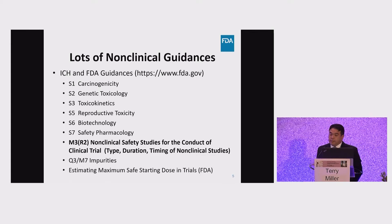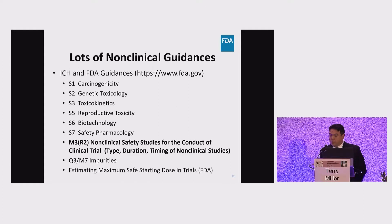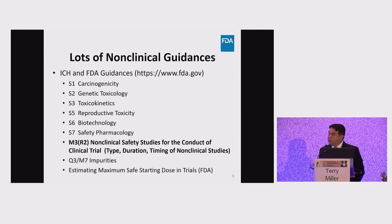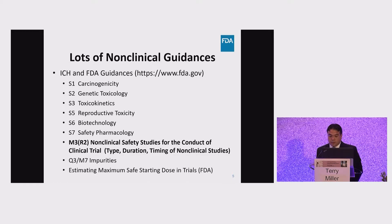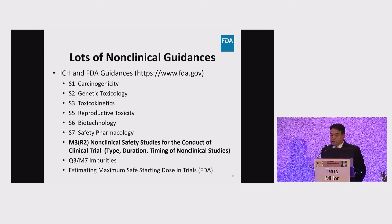There are many non-clinical guidances to help advise you on your non-clinical development programs. The principal guidances are the ICH guidances negotiated and agreed upon by several international regulatory agencies, including the FDA. The most important non-clinical guidance is ICH M3R2, non-clinical safety studies for the conduct of clinical trials, which describes the type, duration, and timing of non-clinical studies.